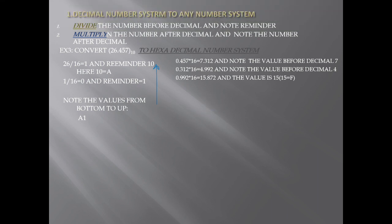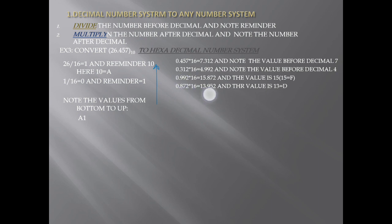Next, 0.312 is multiplied by 16, giving 4.992. Note the digit before the decimal: 4. Then 0.992 is multiplied by 16, giving 15.872. Note the digit: 15, which in hexadecimal is F. Then 0.872 is multiplied by 16, giving 13.952. Note: 13 is equal to D. Now note the values from top to down: 7, 4, F, D.